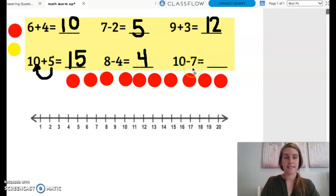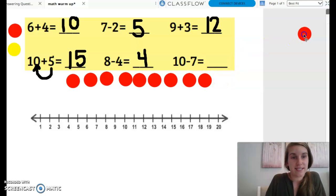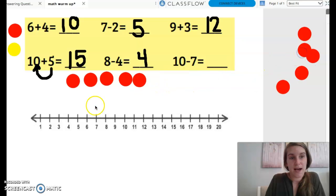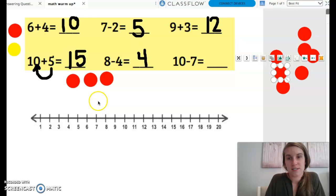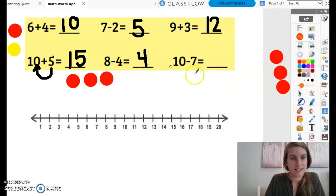And then that minus seven, am I going to add more or am I going to take away? I'm going to take away seven. So I can take away one, two, three, four, five, six, seven. And how many dots are left? Three. That's another friend of 10. Seven and three equals 10.